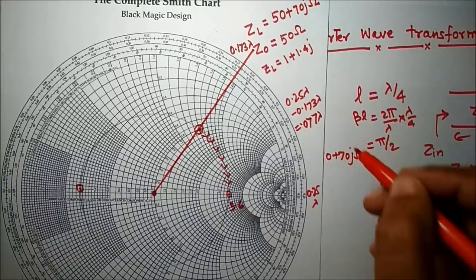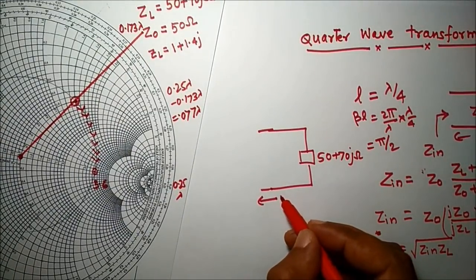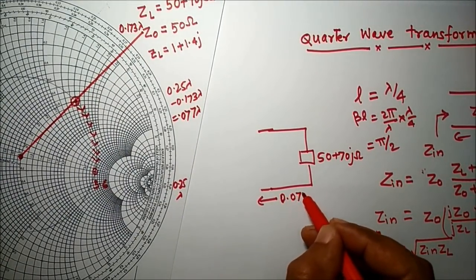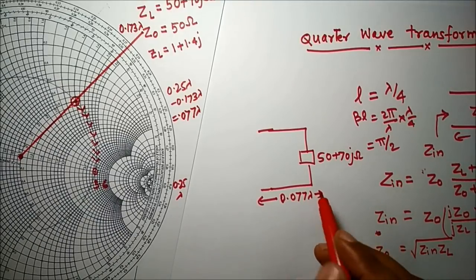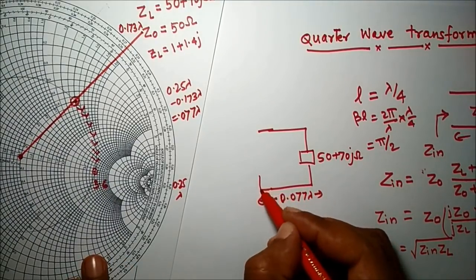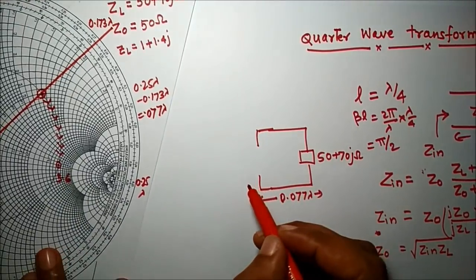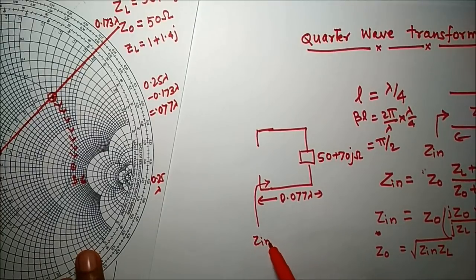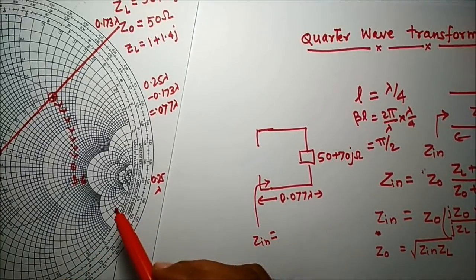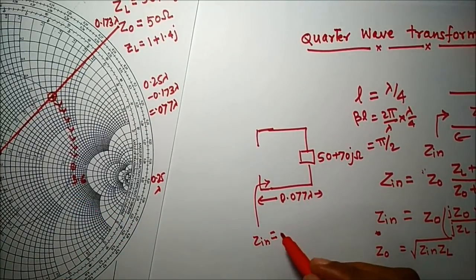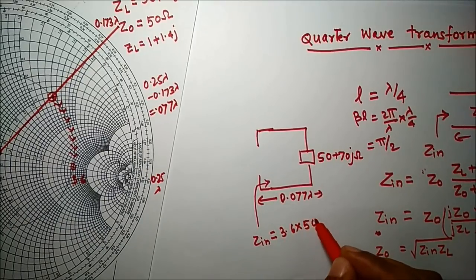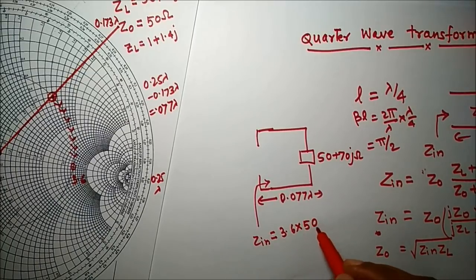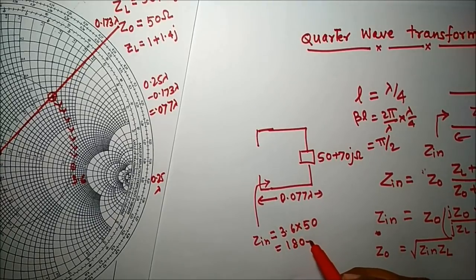That distance is 0.077 lambda. If you move this length from the load towards the generator, you will get a purely resistive input impedance. The input impedance at this point is 3.6 multiplied by 50 ohm — the characteristic impedance — giving 180 ohm.